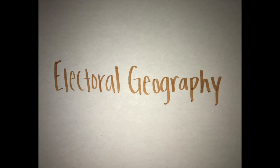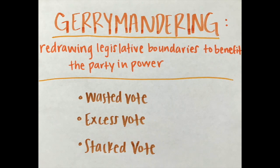Electoral Geography: In democracies, politics must follow legally prescribed rules, but all parties to the political process often find ways of bending those rules to their advantage. The process of redrawing legislative boundaries to benefit the party in power is called gerrymandering. Gerrymandering takes three forms: wasted vote, which spreads opposition supporters across many districts but in the minority; excess vote, which concentrates opposition supporters into a few districts; and stacked vote, which links distant areas of like-minded voters through oddly shaped boundaries.